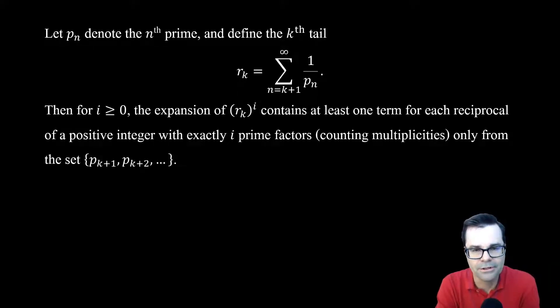So if we look at raising this expression to a power i, an integer power i, then if we expand this out, what's going to happen is that that expansion is going to contain at least one term for every reciprocal of a positive integer with exactly i prime factors, counting multiplicities, but only from the set of primes, the k plus first prime and on.